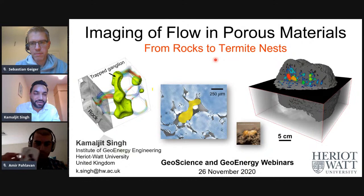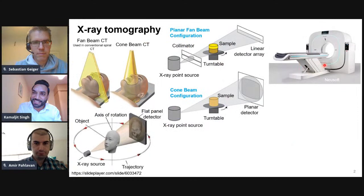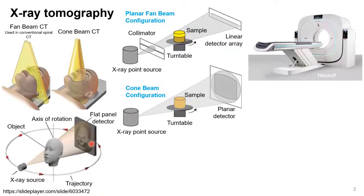Mostly my research is focused on imaging of flow using X-ray tomography — X-ray micro tomography — which is similar to what you see in medical CT scanning. You have a ring-like structure where you find an X-ray source and detector, you put an object on the table, throw X-rays on it, and collect on the other side on a detector, giving a 2D image. You can rotate the assembly, take multiple images from different directions, and combine them to get a 3D image. We use cone beam geometry, where the sample rotates instead of the X-ray source and detector.